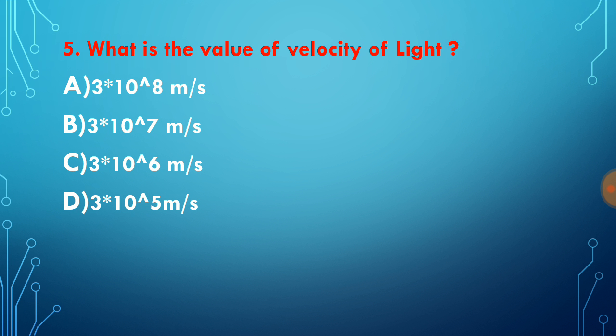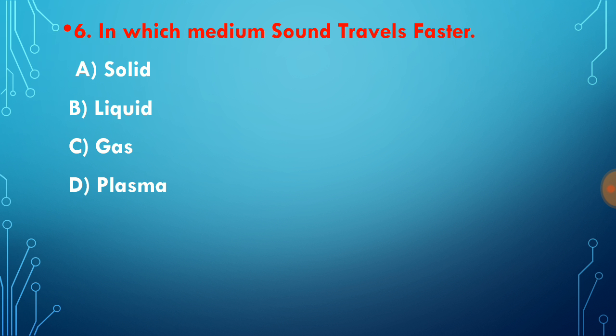What is the value of velocity of light? We all know that velocity of light is 3 × 10^8 meters per second. So option A is correct choice. Question number six: in which medium does sound travel faster?